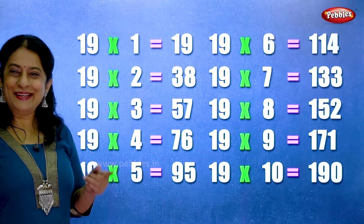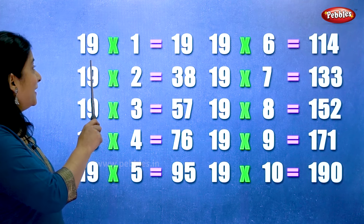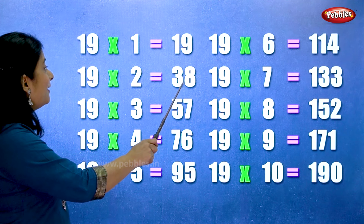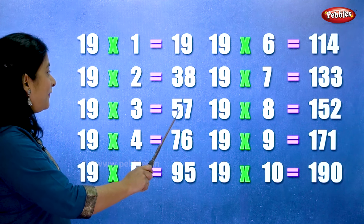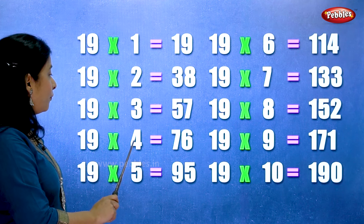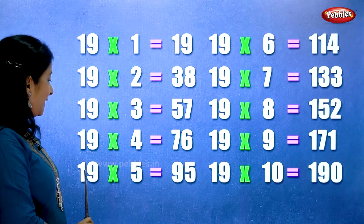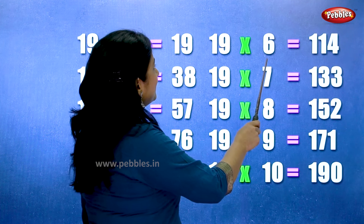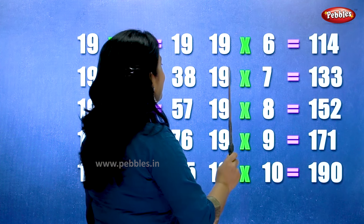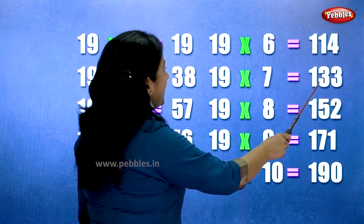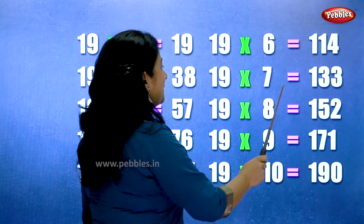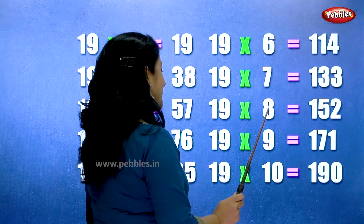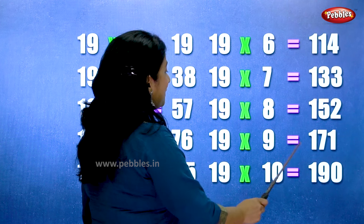Let's learn the table of nineteen one more time. Nineteen ones are nineteen. Nineteen twos are thirty-eight. Nineteen threes are fifty-seven. Nineteen fours are seventy-six. Nineteen fives are ninety-five. Nineteen sixes are hundred and fourteen. Nineteen sevens are one thirty-three. Nineteen eights are one fifty-two. Nineteen nines are one seventy-one. Nineteen tens are one ninety.